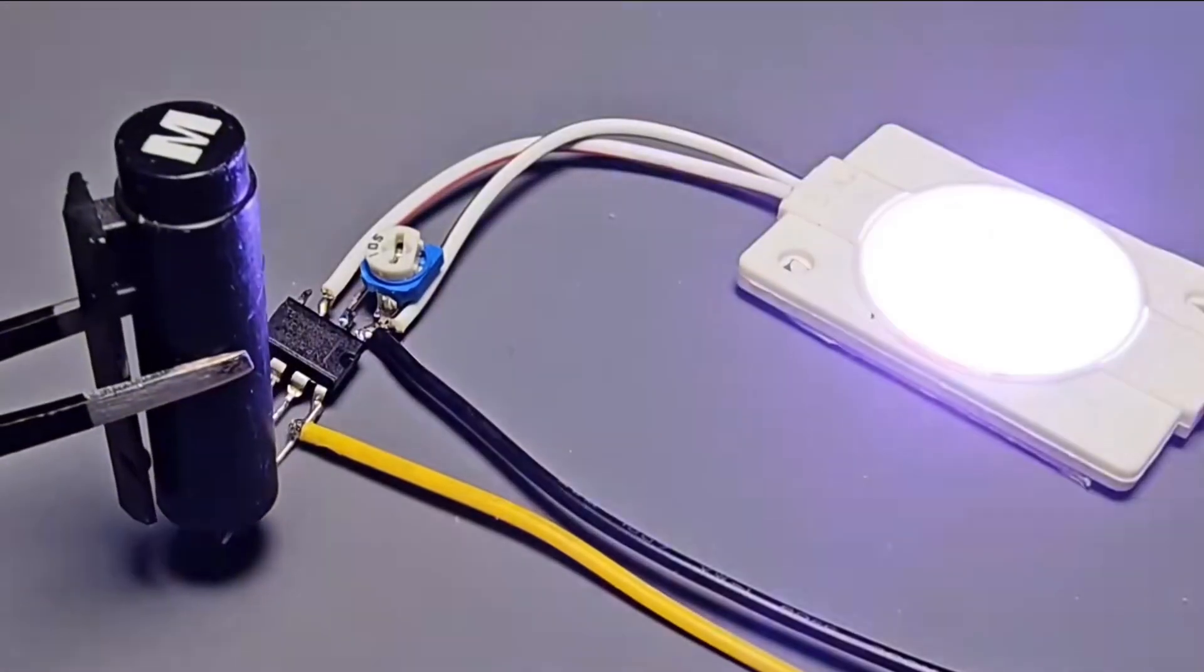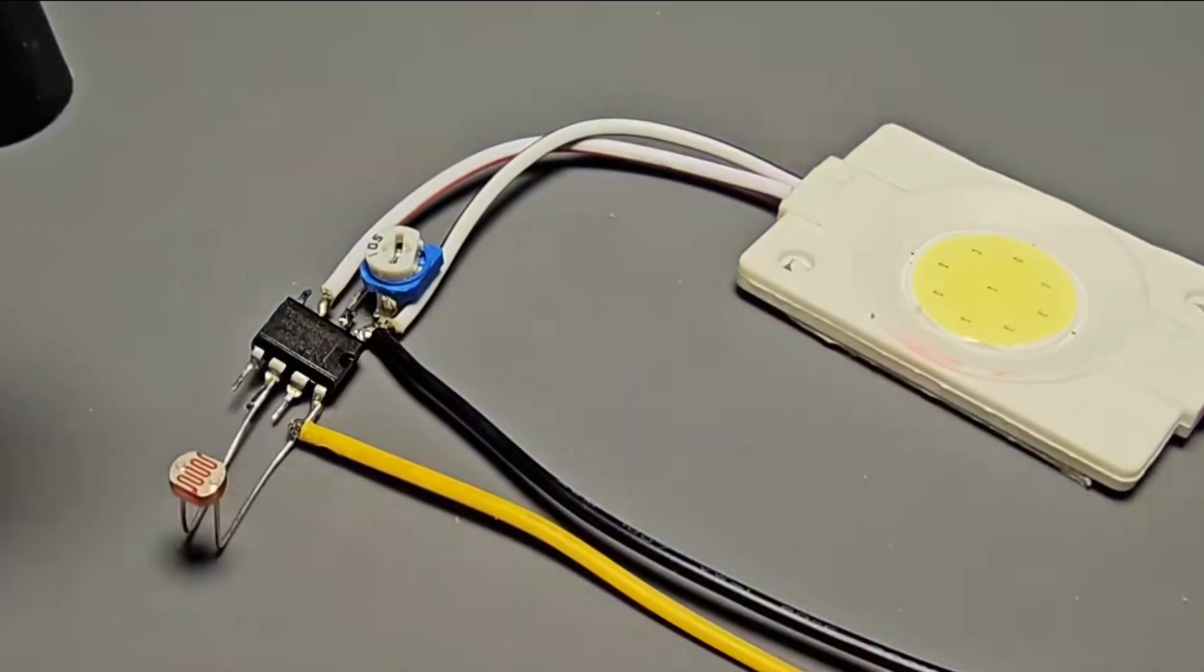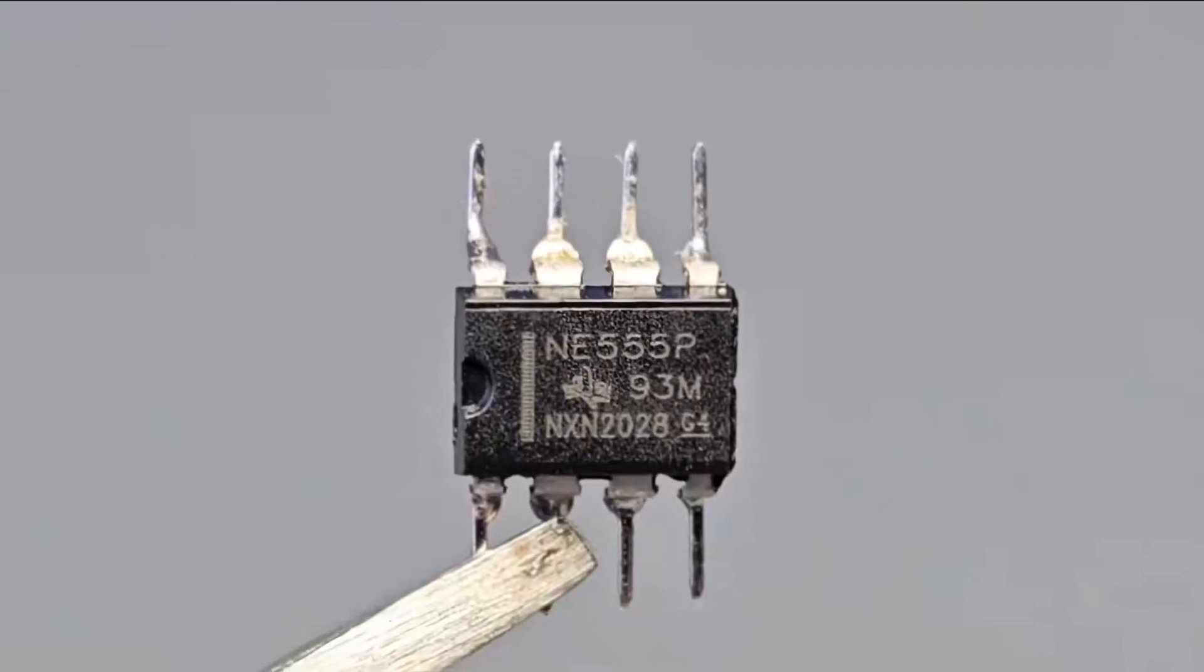Only three components are needed, and we can make a simple light-controlled circuit by ourselves. The core component of the circuit is the 555 timer IC.